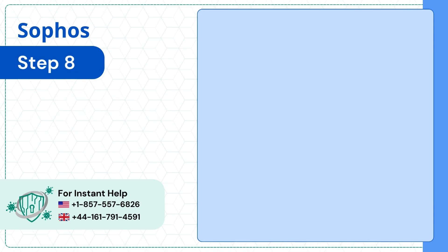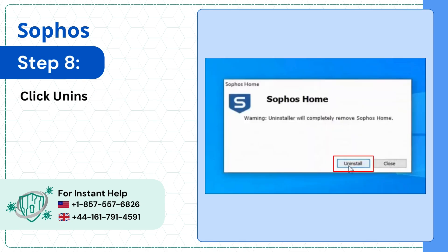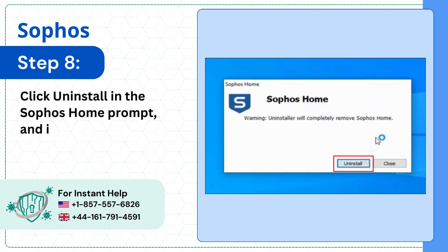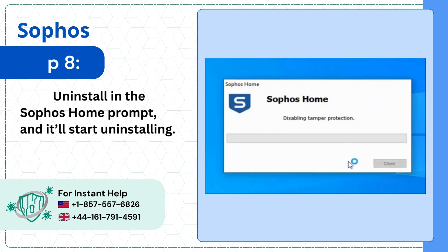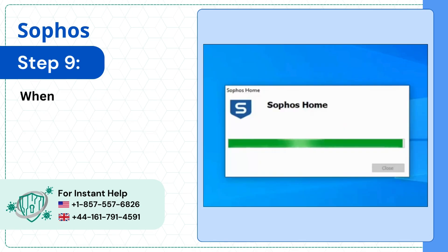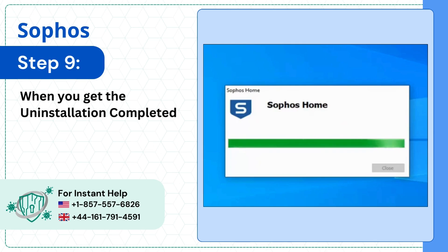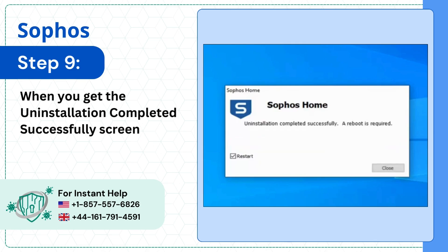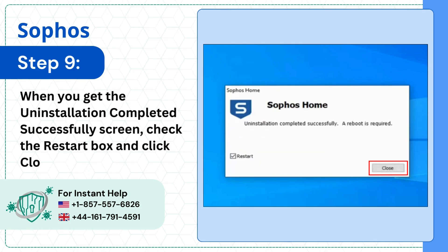Step 8: Click Uninstall in the Sophos Home prompt and it'll start uninstalling. Step 9: When you get the uninstallation completed successfully screen, check the restart box and click Close.